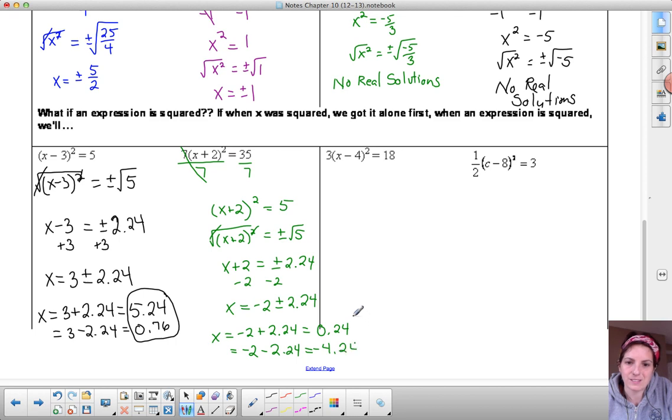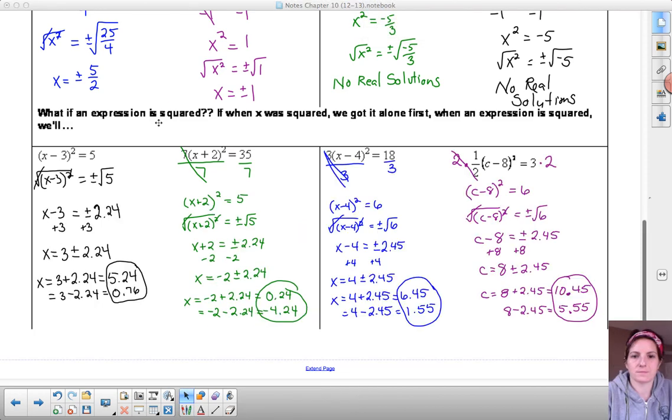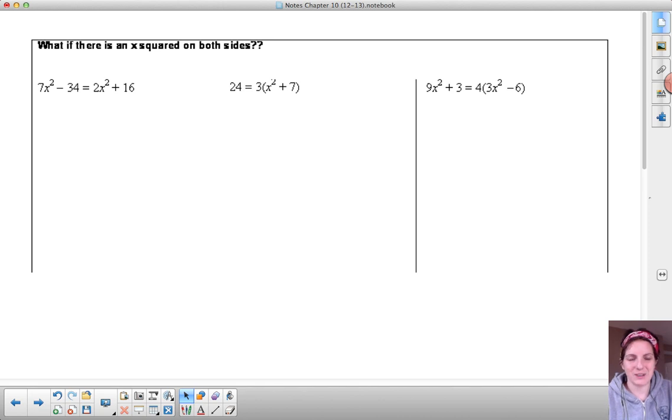Again, you got two problems to give a try. Give them a try, come back and check your work. So here are these four problems, and I hope you did just fine on them. Now there's one more situation that we need to talk about. This last situation is: what if there's an x squared on both sides?